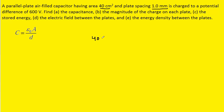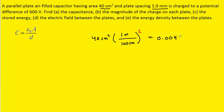Let's take the 40 centimeters squared and convert it into meters squared. To do that, we note that one meter contains 100 centimeters. But since we have centimeters squared, we have to square this conversion factor. That way, the centimeters squared will cancel with this centimeters squared, and we'll be left with meters squared. When we perform that computation, we get 0.004 meters squared — that's the area of one of the plates.